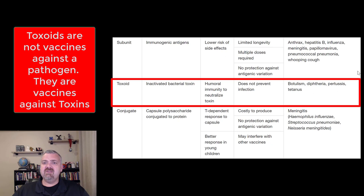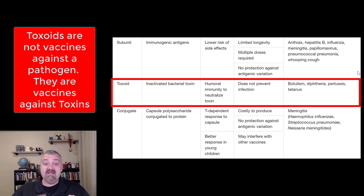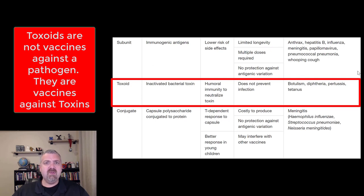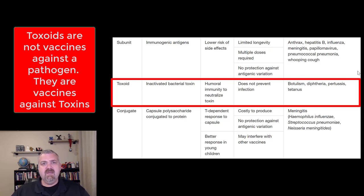Next we have toxoids. Toxoids are a special kind of vaccine because they're not a vaccine against an organism — they're a vaccine against the toxins that organisms produce. It's an inactivated bacterial toxin, so your immune system will recognize the toxin and be able to deal with it when it shows up. It produces only humoral immunity from B cells, but that's totally fine because that's what deals with toxins anyway. Examples include botulism, diphtheria, pertussis, and tetanus. For tetanus, the vaccine is not trying to kill Clostridium tetani — it's inactivating the toxins as they're being produced.